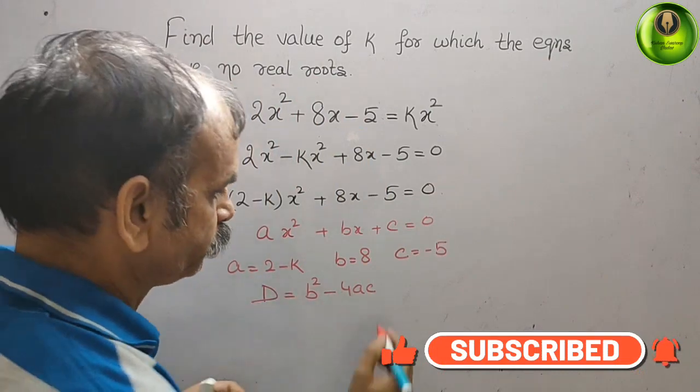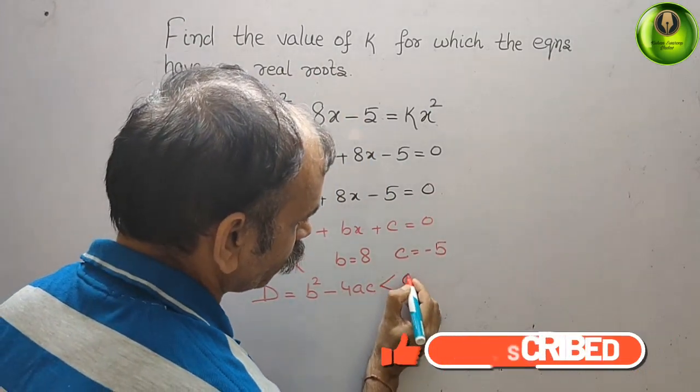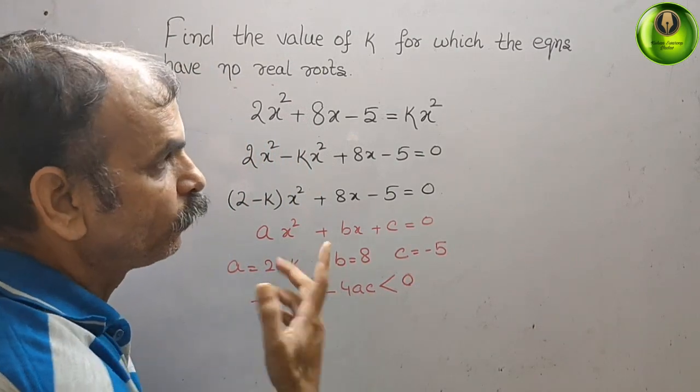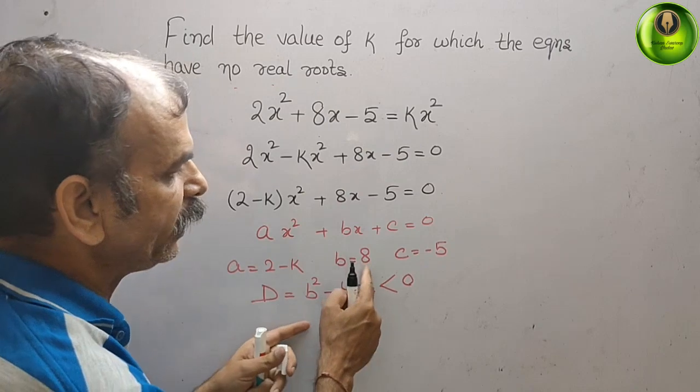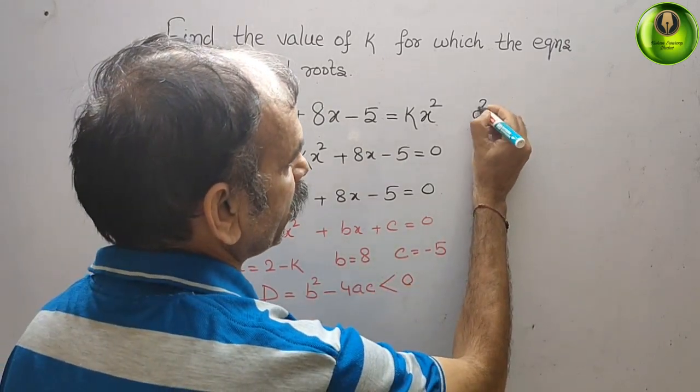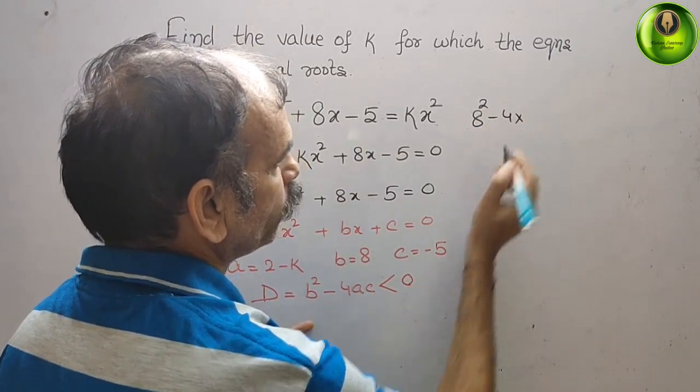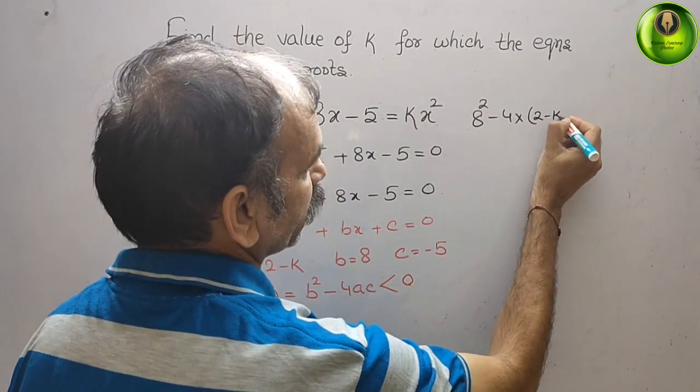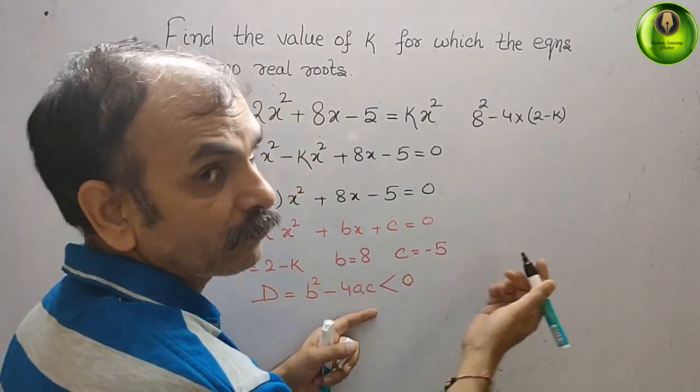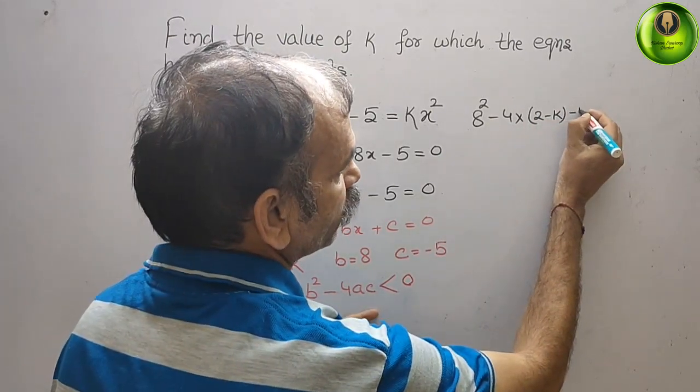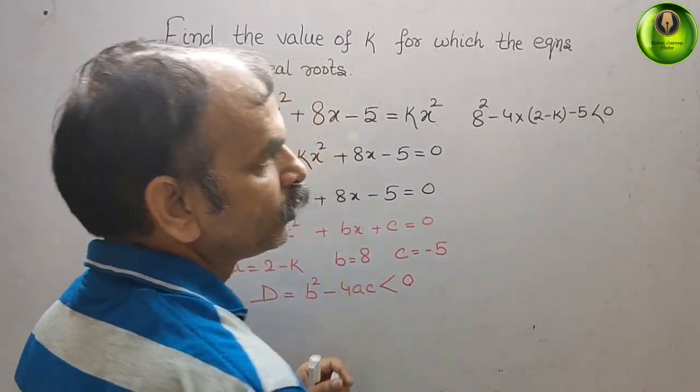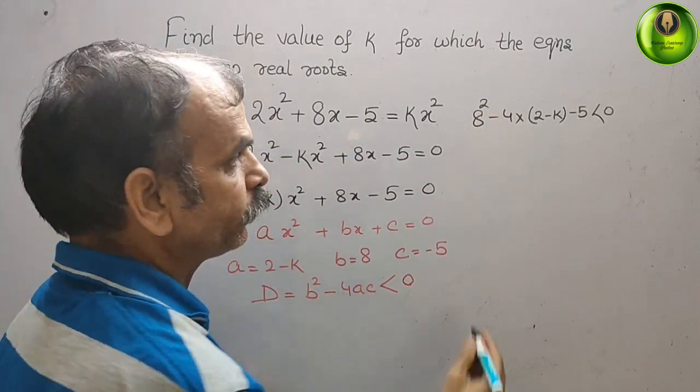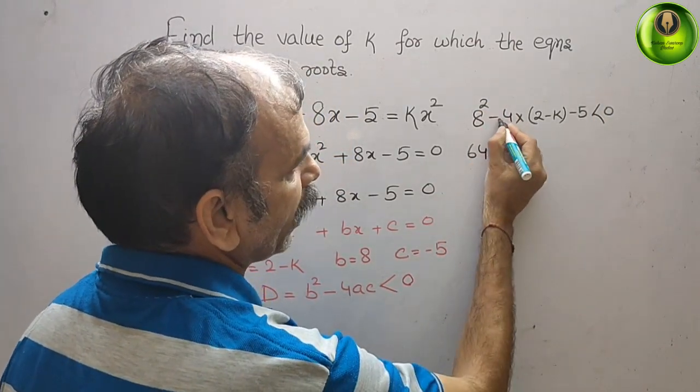Now substitute the value of a, b, c here. What we will get? B square means 8 square, 8 square minus 4 into a, a is 2 minus k, 2 minus k, and c is minus 5, minus 5. It should be less than 0.